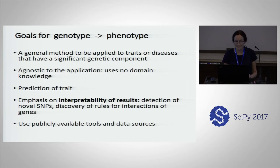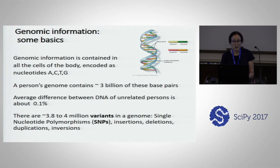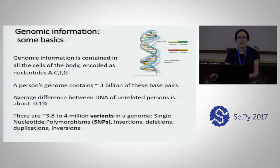Just a quick Genomics 101. Genomic information is contained in all the cells of the body. Here are nucleotide names, but we just code them as A, C, T, and G.